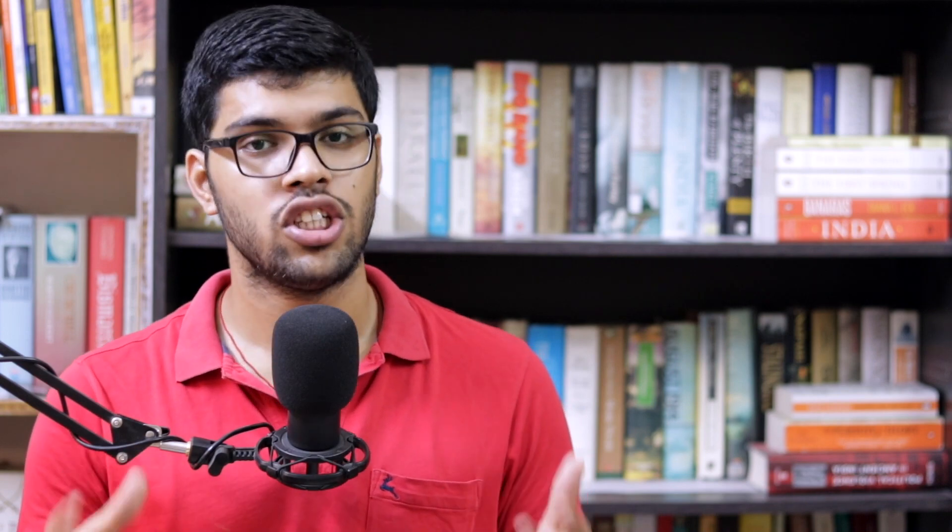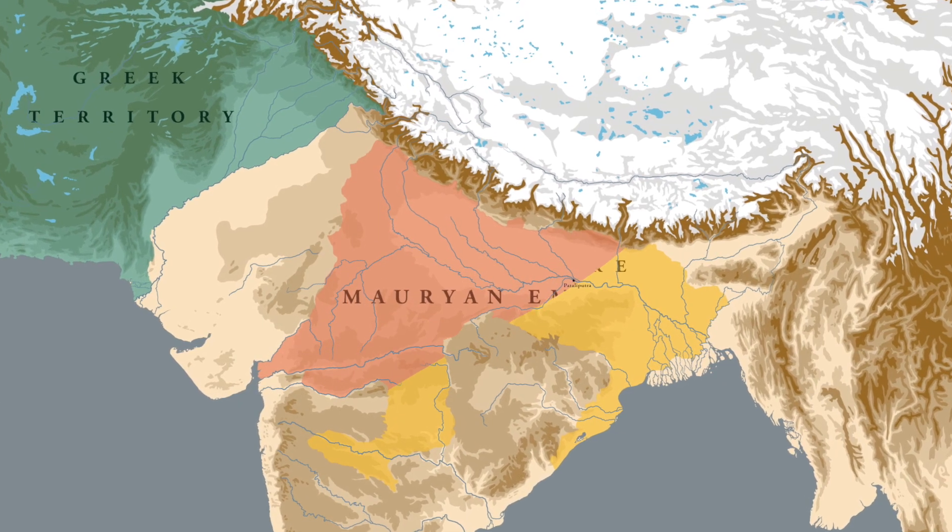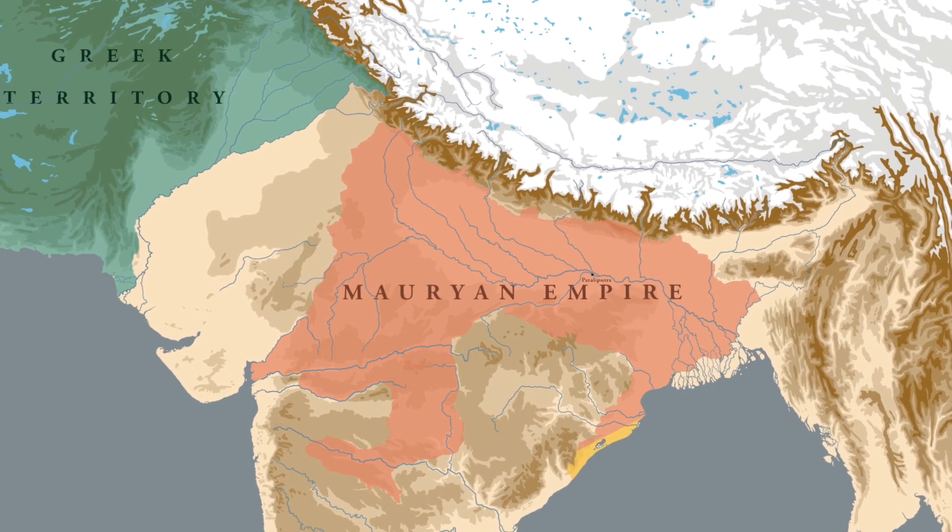He now decided to change his approach and attack at the frontiers of the Nanda empire. This approach worked very well for Chandragupta, and it took around four to five years for him to completely destroy the Nanda empire. Chandragupta now had to deal with the Nanda emperor. What happened to the Nanda emperor is uncertain. Jain sources tell us that Chandragupta spared the Nanda emperor and allowed him and his family to take as much treasure as a chariot could load, while other sources tell us that Chandragupta put the Nanda emperor to death.